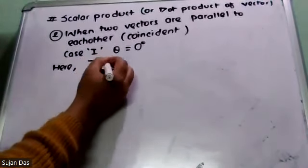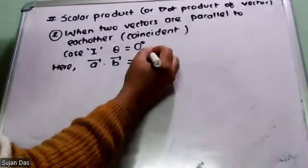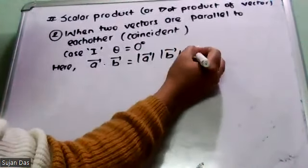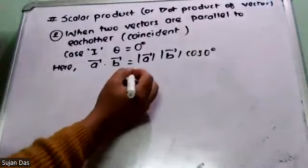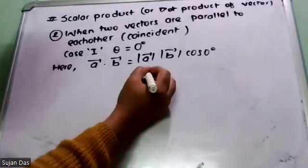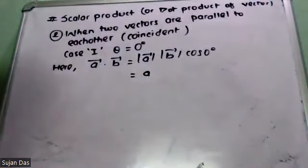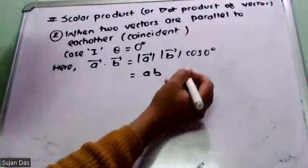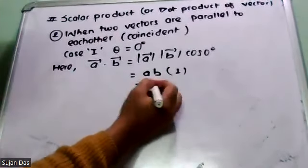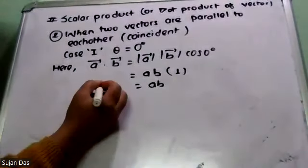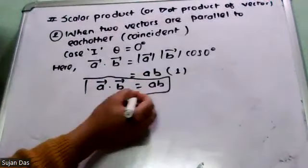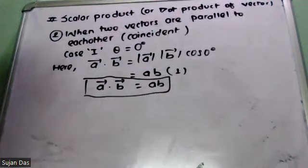Here, vector A dot vector B equals the magnitude of vector A times the magnitude of vector B times cos 0 degrees. The magnitudes are A and B respectively, and cos 0 is 1. So vector A dot vector B equals AB. This is the condition of parallelism.